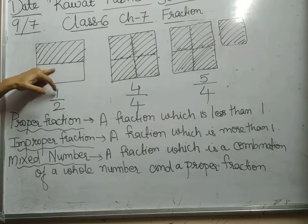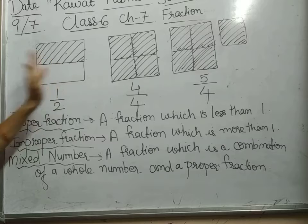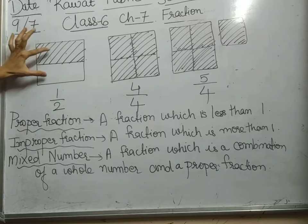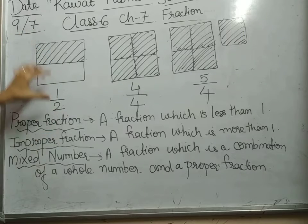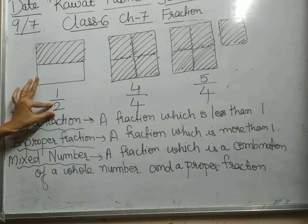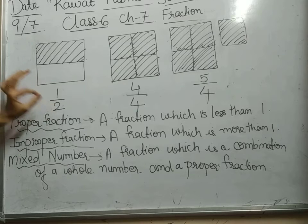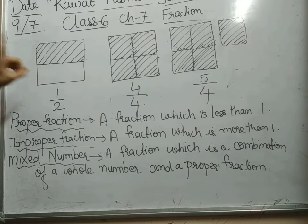As you see, this is a sheet of paper and it is divided in two halves. I have shaded the half part of it. In two parts, there are total two parts. So, this denominator tells us how many total number of parts are there. This one shows the number of shaded part. There is only one shaded part. So, it is one by two.